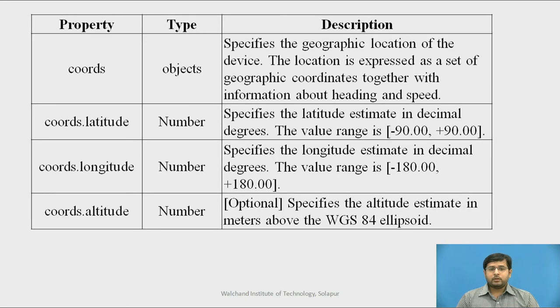It specifies the geographic location of the device. The location is expressed as a set of geographic coordinates together with information about heading and speed. This is one of the mandatory things that you have to give in your JavaScript. coords.latitude will return the latitude estimate in decimal degrees. The value ranges from minus 90.00 to plus 90.00. We have coords.longitude which will return the longitude in decimal degrees. The range is minus 180 to 180.